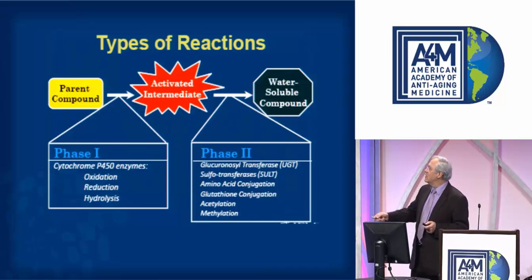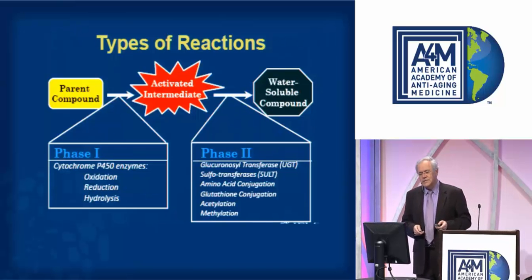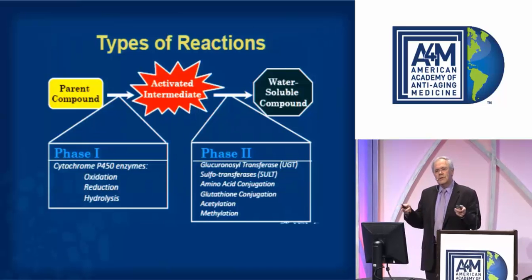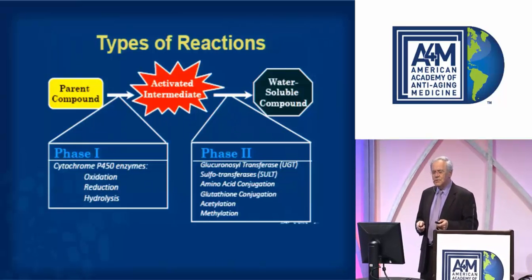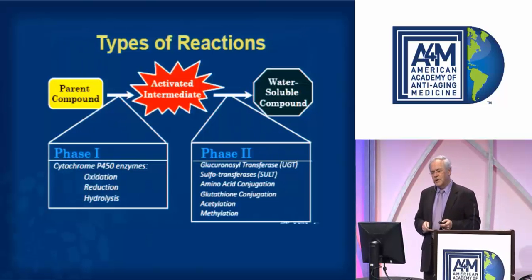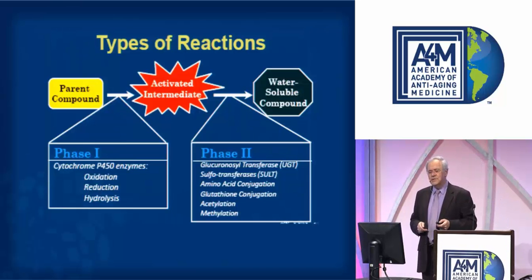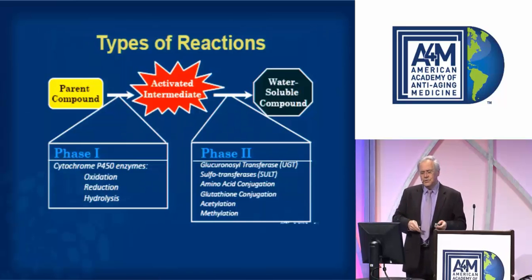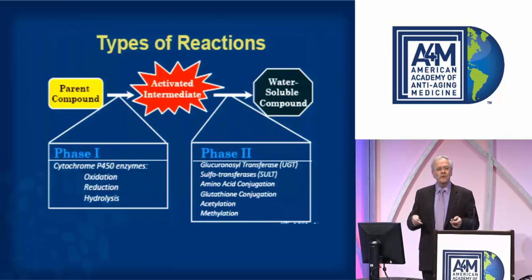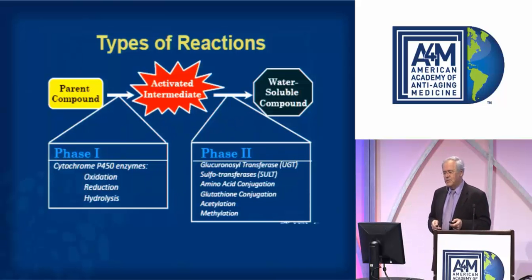We have the parent compound that comes into the cytochrome P450 phase one enzyme systems, where they go through various chemical reactions such as oxidation, reduction, or hydrolysis. That activated compound is usually more toxic than the original parent compound. Then it is shunted over to phase two, where something is added — such as a glutathione molecule, a single or double carbon molecule, or an amino acid.